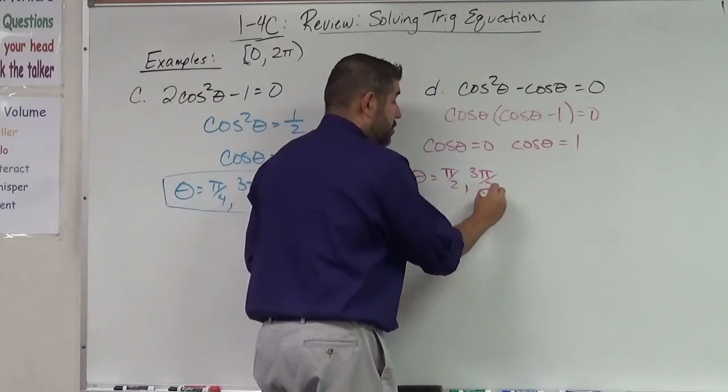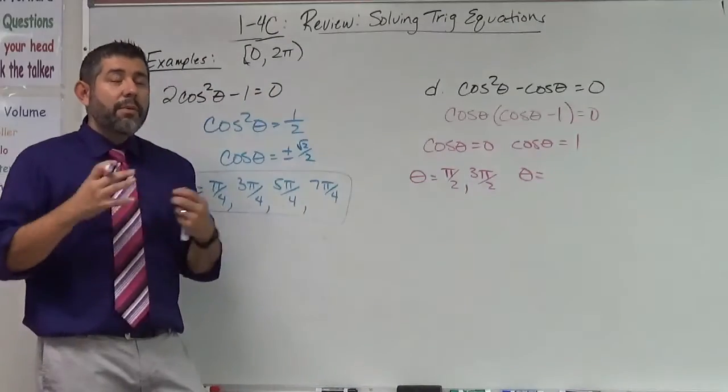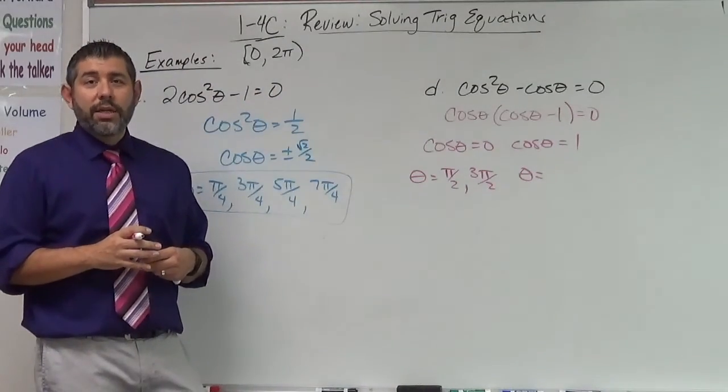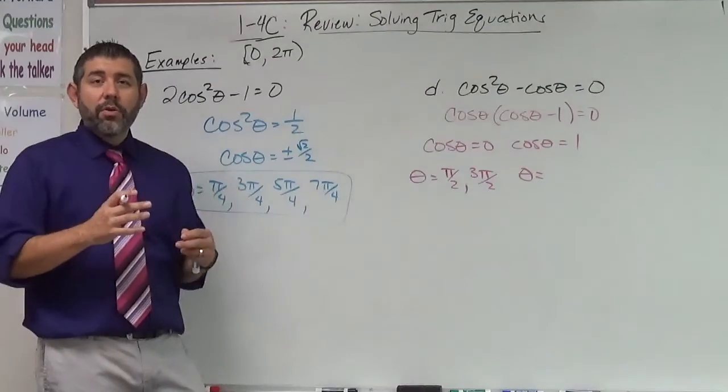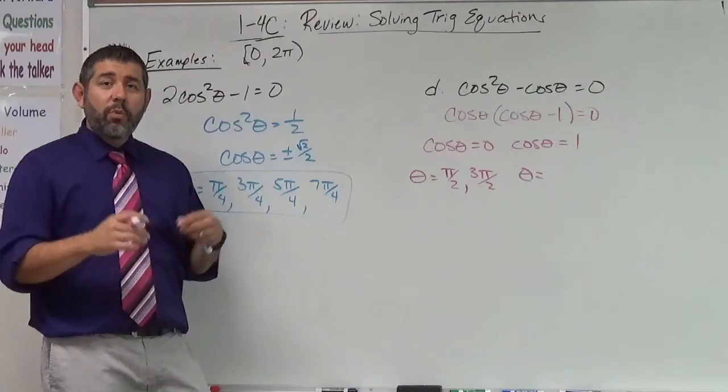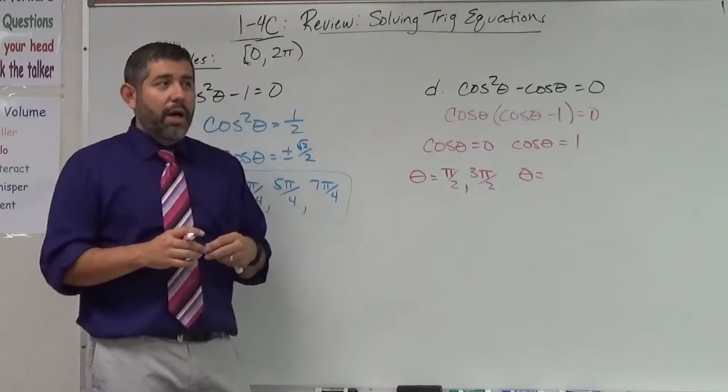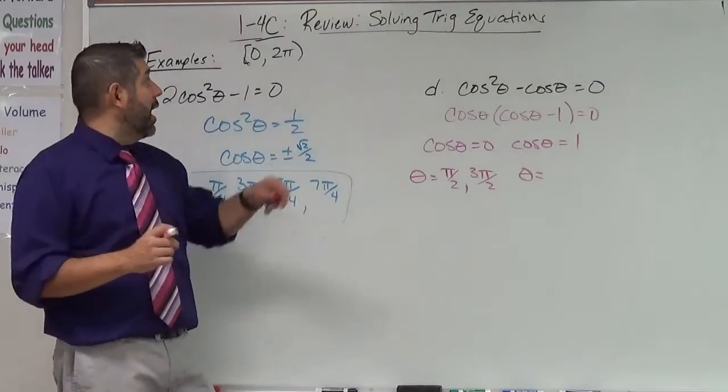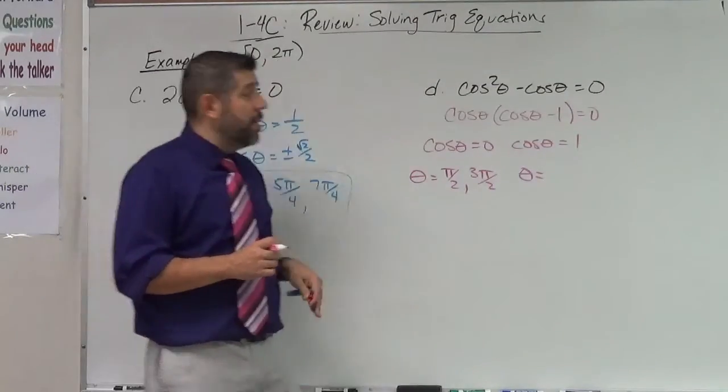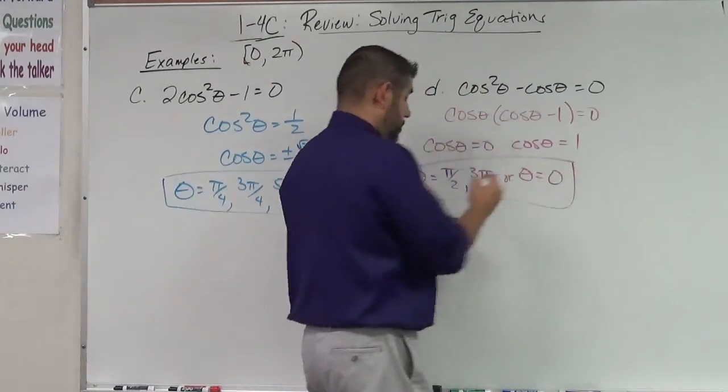This is why, guys, this is so critical that you start remembering your unit circle. If you haven't memorized it already, start thinking about where those points are and really memorize it in this way. So cosine theta equals one. Where is the x value, the x coordinate one on the unit circle? Well, it's either going to be at zero or two pi, but I'm not including two pi in my interval, so it's only going to be zero. And there we go. Those are answers to that.